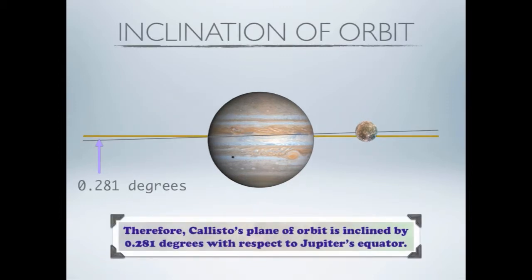This diagram shows the inclination of Callisto's orbit with respect to Jupiter's equator. This is actually quite minute, only measuring 0.281 degrees.